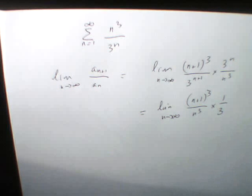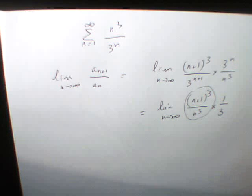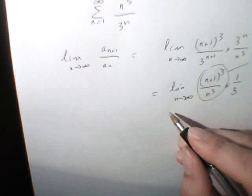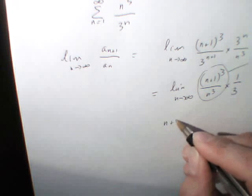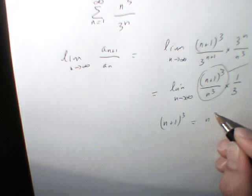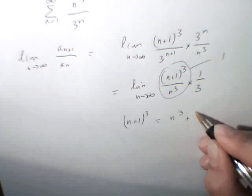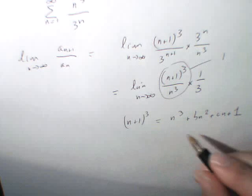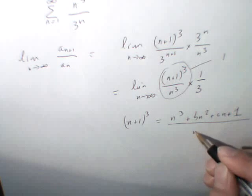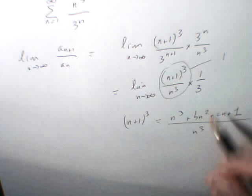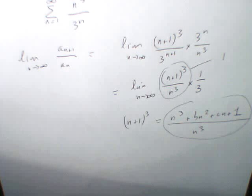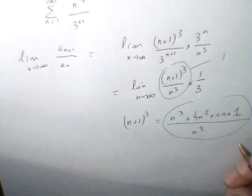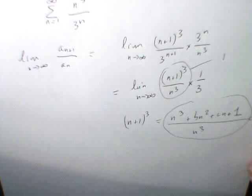Do you agree with me? Now, we know that the limit of (n+1)³/n³ is going to be 1. If you develop (n+1)³, you're going to have something like n³ + bn² + cn + 1, and so the limit of this whole expression for n tending towards infinity is going to be equal to 1.